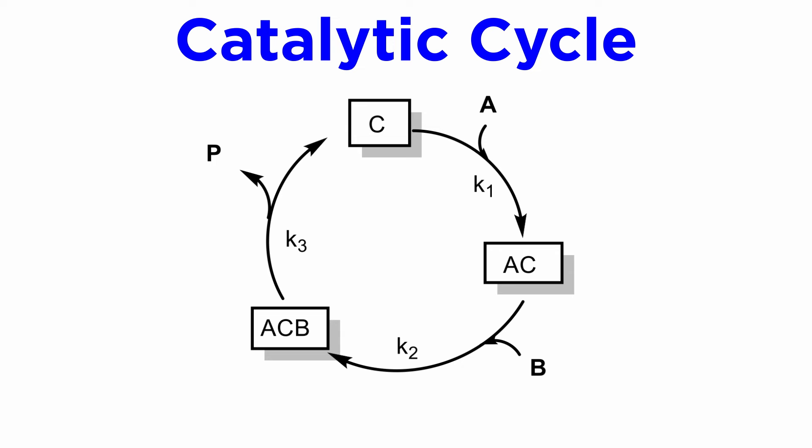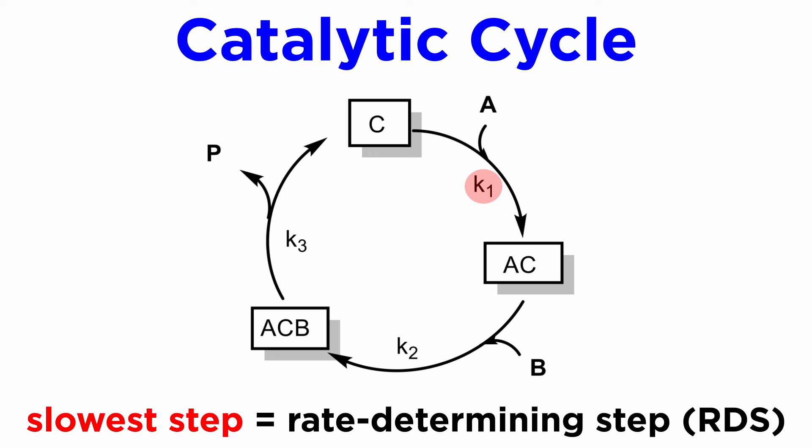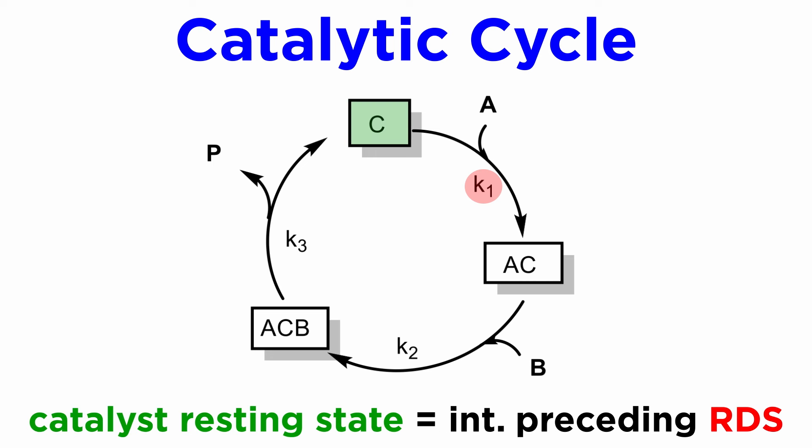Finally, we need to mention that in our simple catalytic cycle consisting of three steps, one is usually much slower than the others, and therefore the rate of the reaction will depend only on that particular slow step, which is called the rate determining step, or RDS. The intermediate preceding this step is called the catalyst resting state, because if you monitor the reaction, you will only see the catalyst in that form. For example, if in our cycle the RDS is the step from C to CA, any analytical monitoring of the catalytic cycle will only show the species C, and none of the other catalytic intermediates.